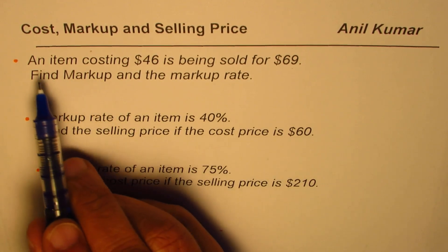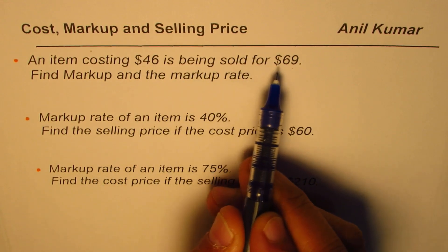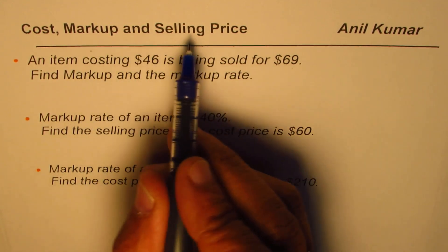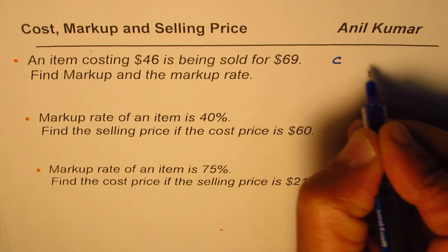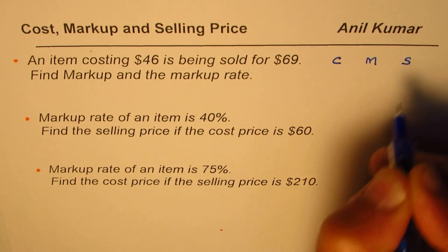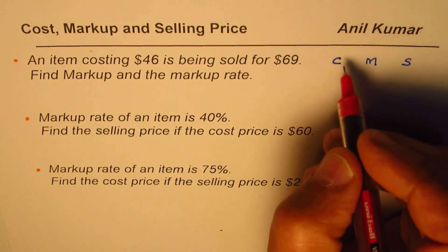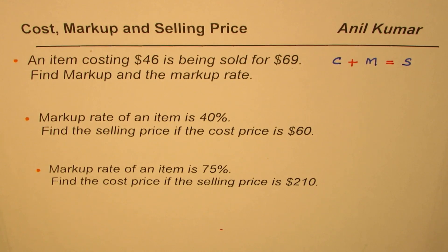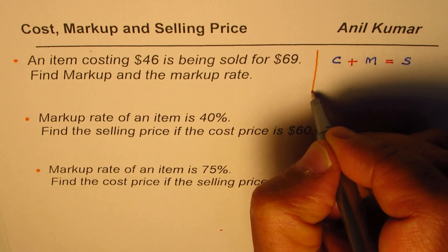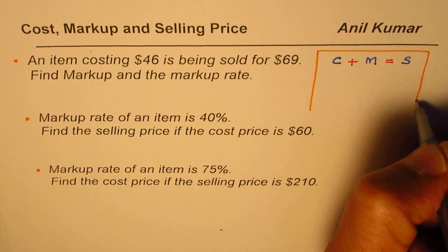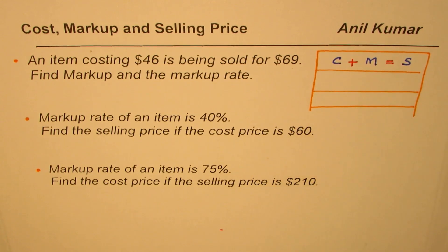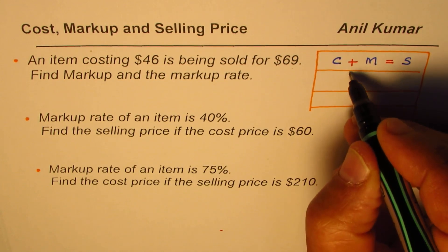Starting with the very first one: an item costing $46 is being sold for $69, find markup. The relation between cost, markup, and selling price is: if C is the cost, M is the markup, and S is the selling price, then cost plus markup equals selling price. We will make a table to give you a model to solve such questions, and this table is going to work for all kinds of questions. We will explain this table as we solve the question, and then it will become very simple for you.